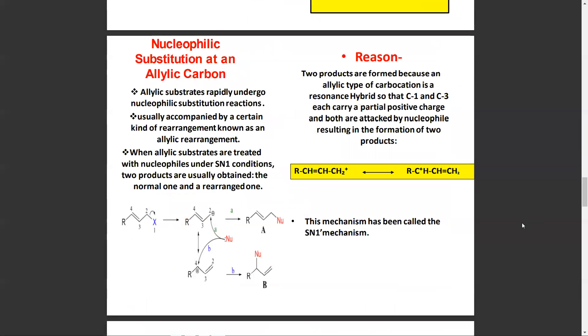Nucleophilic substitution at an allylic carbon: Allylic substrates rapidly undergo nucleophilic substitution reactions, usually accomplished by a certain kind of rearrangement known as allylic rearrangement. When allylic substrates are treated with nucleophiles under SN1 conditions, two products are usually obtained: the normal one and the rearranged one.